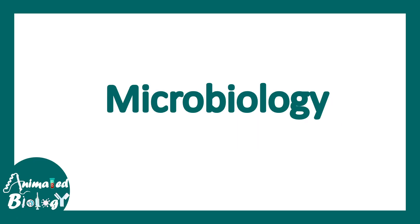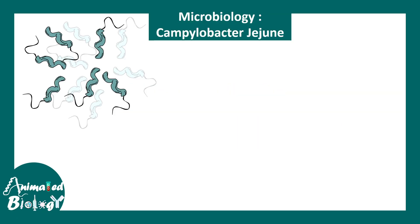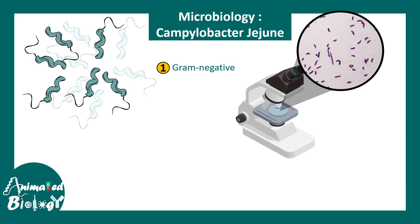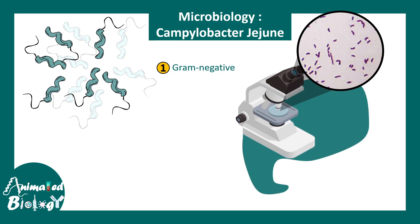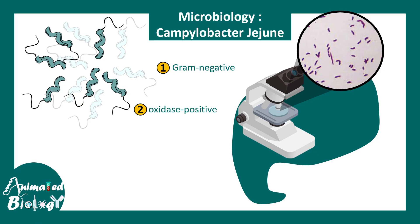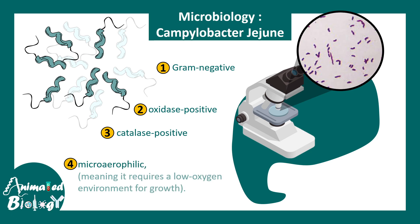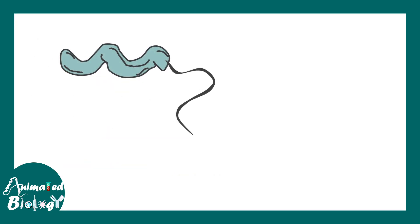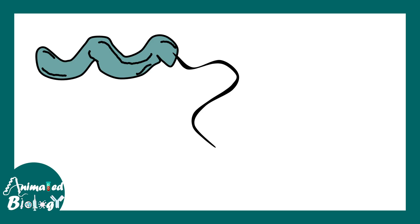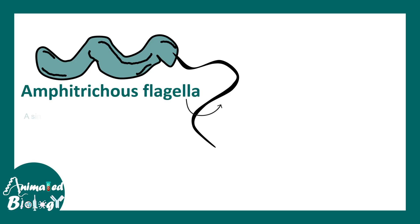Campylobacter jejuni has a characteristic screw-shaped or S-shaped structure. They are gram-negative, so they can be identified using gram staining and have that characteristic shape under the microscope. They are oxidase positive, catalase positive, and microaerophilic, needing a low-oxygen environment for optimal growth. They have a single polar flagellum which provides the organism the capability of a dart-like motion.